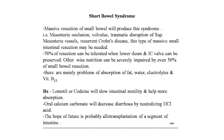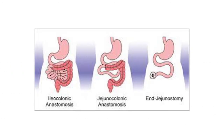Now, short bowel syndrome. Massive resection of small bowel produces this syndrome, causes include mesenteric occlusion, volvulus, traumatic disruption of superior mesenteric vessels, and recurrent Crohn's disease. 70% resection can be tolerated when the low ileum and ileocecal valve can be preserved; otherwise, nutrition can be severely impaired by even 50% small bowel resection. Main problems are absorption of fat, water, electrolytes, and vitamin B12. Treatment: lomotil slows intestinal motility and aids absorption. Oral calcium carbonate decreases diarrhea by neutralizing hydrochloric acid. The future hope is probably adult transplantation of a segment of intestine.